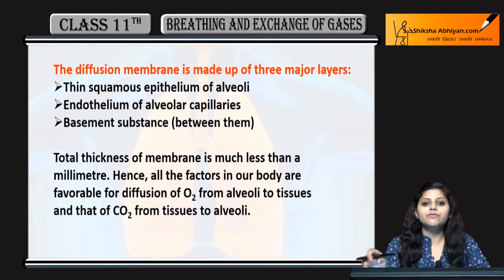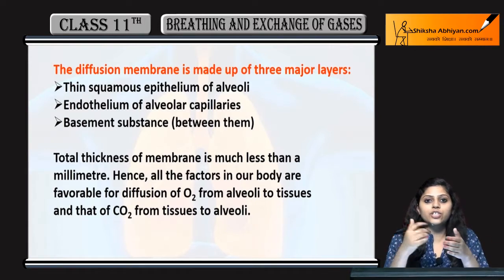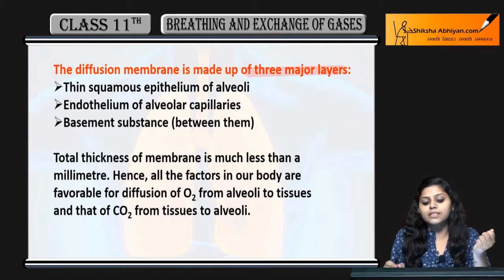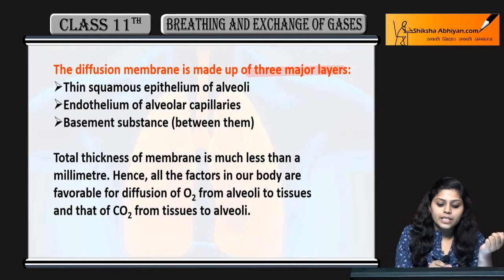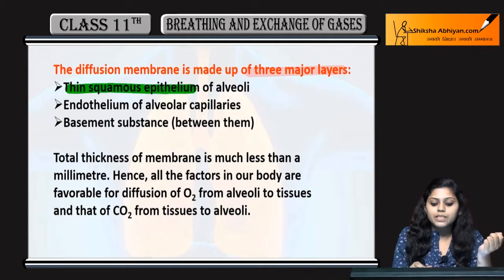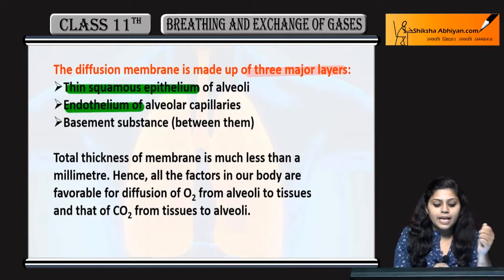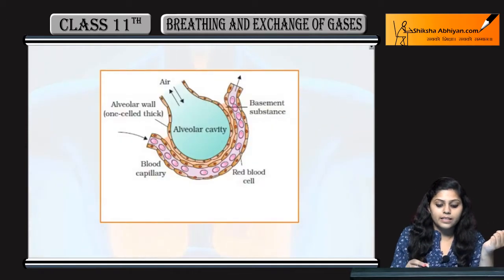We have talked about the diffusion membrane where gases are exchanged. The diffusion membrane is made from the alveoli, which is made from three major layers: thin squamous epithelium, endothelium of alveolar capillaries, and basement substance between them.